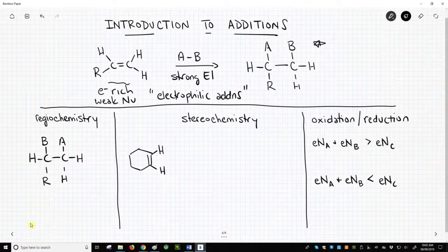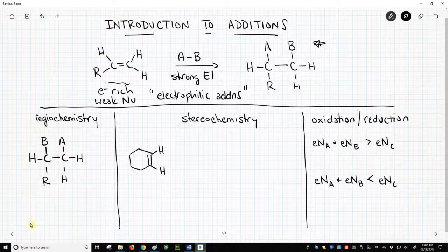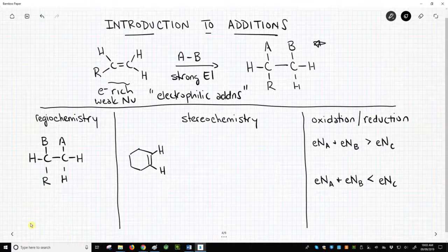The two molecules are isomers, specifically regioisomers of each other. Each addition reaction we study normally favors one regioisomer over the other, and we need to understand which regioisomer will be favored and why.